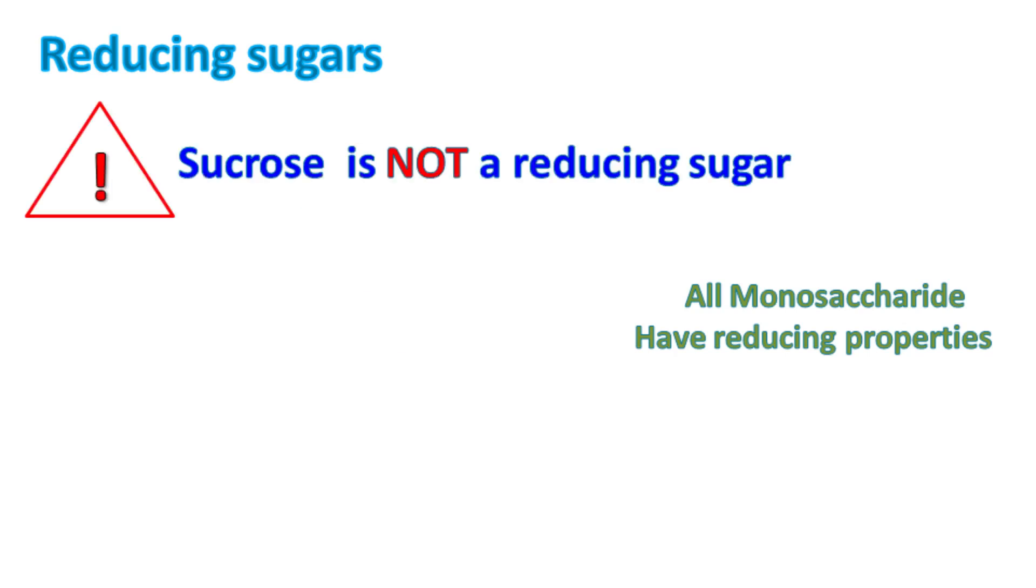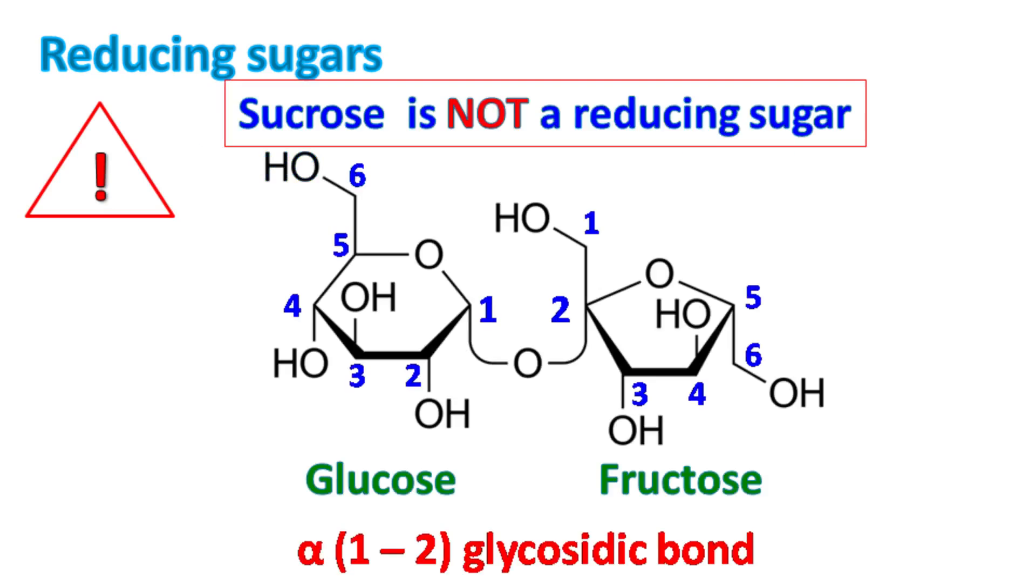Sucrose is not a reducing sugar. I repeat, sucrose is not a reducing sugar. If you see the structure of sucrose, it's made up of glucose and fructose linked together by alpha-1-2 glycosidic bond.